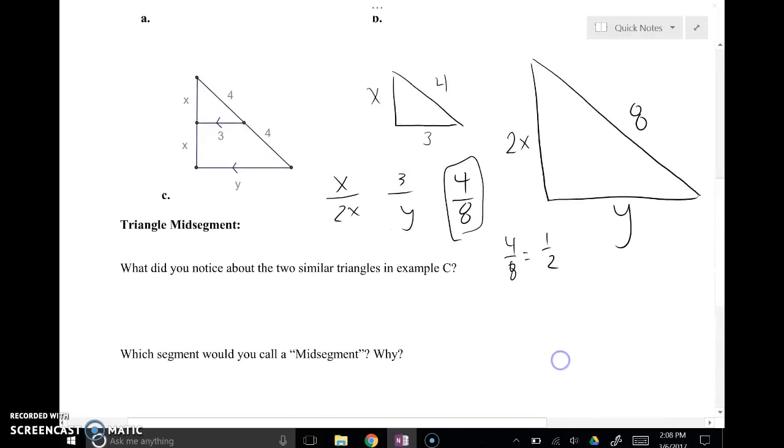So we pointed out that 3 was half the length of Y because the scale factor was 1 half. So that would be 6. Now, one thing I do want to point out that I don't want to get missed is if the segments on either side of these points here and here are equal, then that means that that point and that point are mid-points.